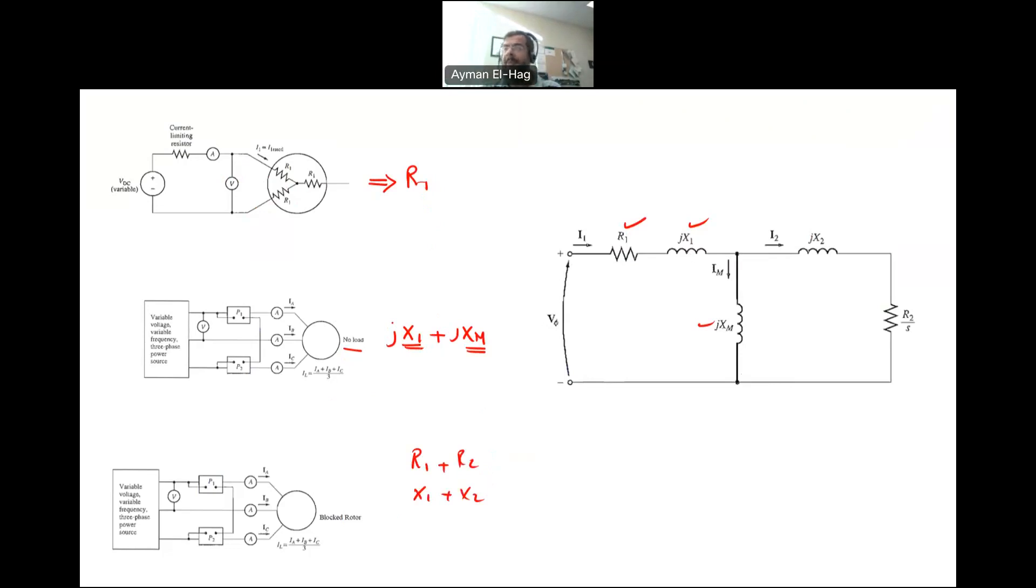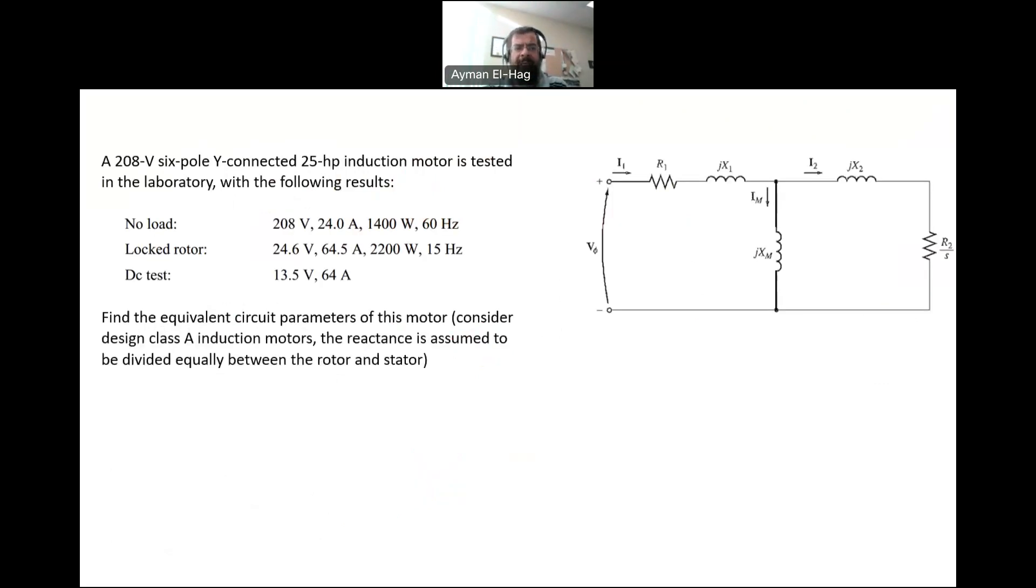It will also give us X1 plus X2. Usually there is an indication about the ratio of the two. If we have a type A motor, then X1 and X2 will be equal. Knowing X1, I will be able to find XM. This is how we use the tests to find these parameters.